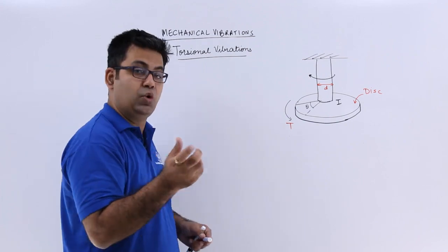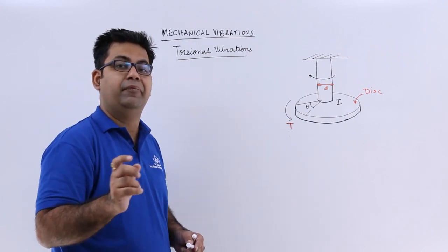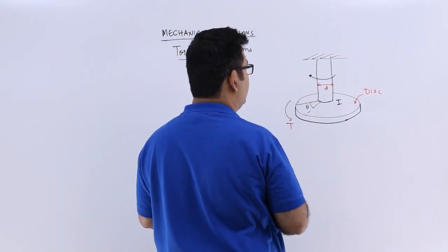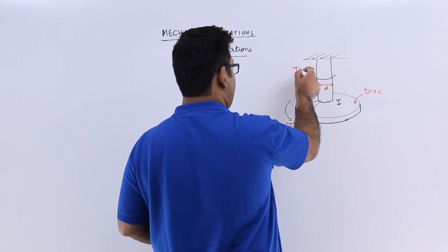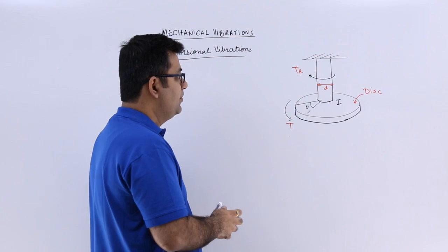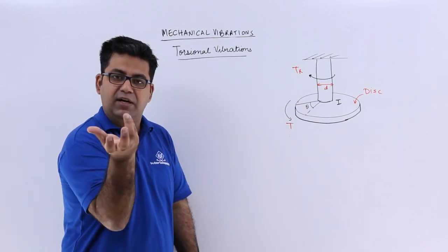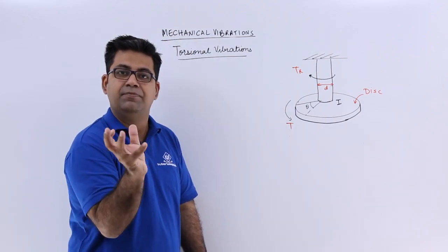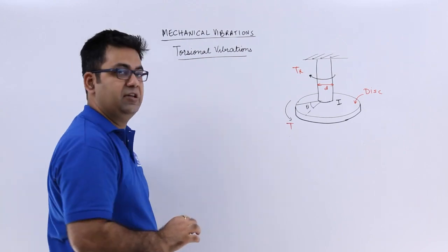Now what happens is a restoring torque is developed in the shaft which brings it back. So this is the restoring torque. So this brings about vibration like this. And this is what we call the torsional vibration.